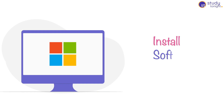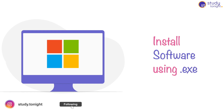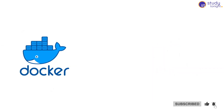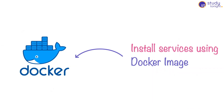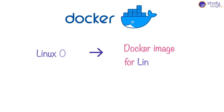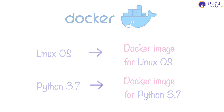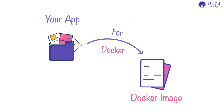Another important part of learning Docker is the Docker image. If you have to install any software on your Windows machine, you need a .exe file, and similarly on macOS you need a .dmg file — on Docker, this is the Docker image. If you want to install a Linux operating system in your Docker container, you use a Docker image for Linux. If you want to install Python 3.7, you need a Python 3.7 Docker image. Similarly, you also create a Docker image for your own application to run it inside a container, whether it's a Java application, a Django application, or anything else.